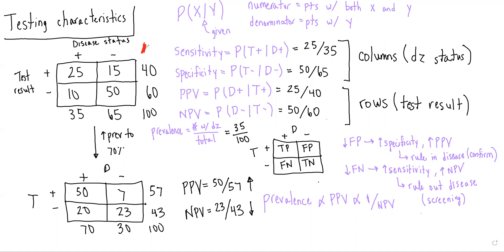For these, I really like to get down to the definitions and think about what we're actually calculating for each of these quantities. I think about them in terms of conditional probabilities — the probability of X given Y. If you think about it this way, you can always come up with the proportion you need to calculate, because the numerator will be patients with both X and Y, whereas the denominator will be patients just with Y.